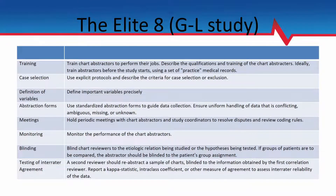They came up with eight high-quality characteristics. These include: training, so your med student abstractor needs to be trained on how to do it. Case selection needs to be well-defined — just like a clinical trial, you need clear inclusion and exclusion criteria established beforehand. Definition of variables — just like a clinical trial, you have to know exactly what data you're going to collect.